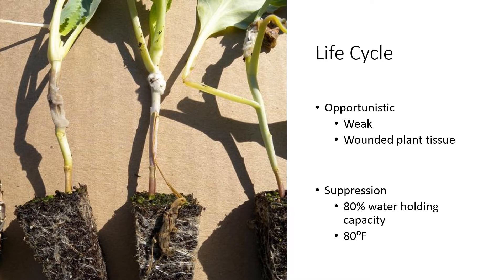Any amount of excess water — flooding or water holding capacity above 80 percent, absolute saturation — will suppress or even start to decompose sclerotia and weaken Sclerotinia. Also, at about 80 degrees Fahrenheit, any actively growing Sclerotinia will start to die back, or if sclerotia are dry and dormant, they will remain dormant at and above about 80 degrees Fahrenheit.